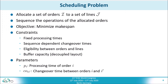The goal of the scheduling problem is to allocate a set of orders I to a set of lines J and sequence the operations of the allocated orders. The objective of the optimization is to minimize the makespan of the schedule. Some constraints include fixed processing times for all orders on the lines, sequence-dependent changeover times, eligibility between orders and lines, and buffer capacity constraints for the decoupled layout. The most important parameters are the processing time of each order and the changeover time between two different orders.